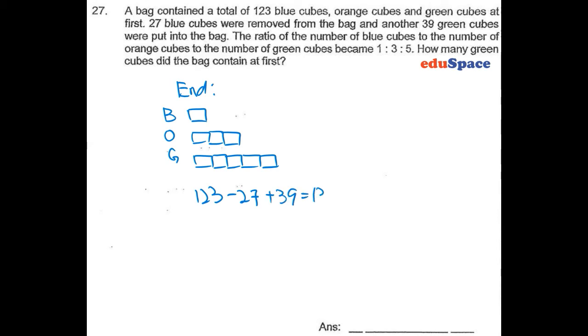This will be equals to 135, meaning at the end there are a total of 135. So 9 units will be equals to 135, and 1 unit will be equals to 15.